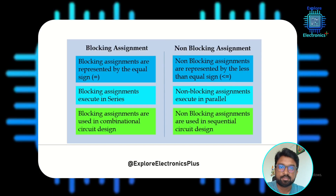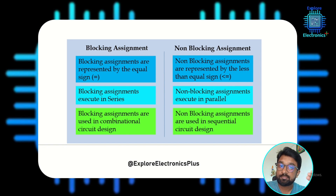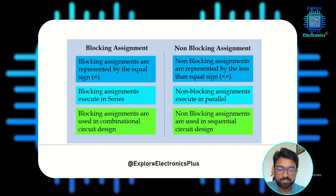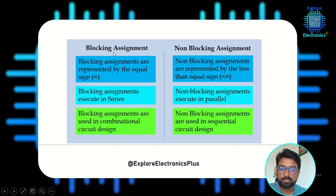That is the first difference with respect to operators. Blocking assignments are executed in series and non-blocking assignments are executed in parallel. In series, if you have three statements — y = a + b, x = a - b, and p = a * b — they execute one after the other. The first statement blocks execution of the second, and the second blocks the third. That's why it's called a blocking assignment.